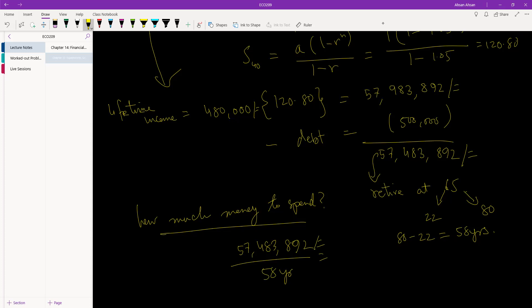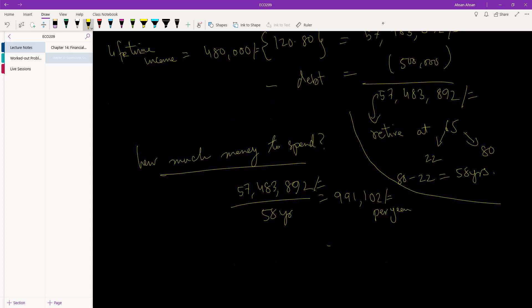And what you get, use my calculator, 57,483,892, divided by 58. And you are going to have 991,102 Taka per year. Or if you want to find it per month, divide it by 12. So you are going to have 82,592 Taka per month to spend in your life on average.